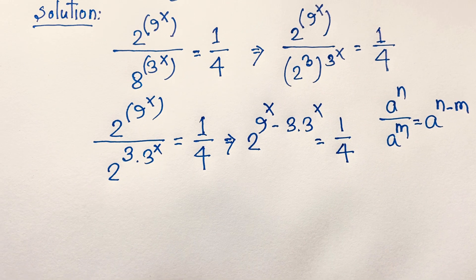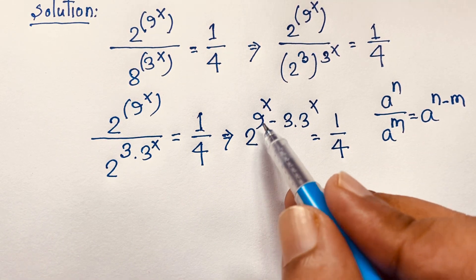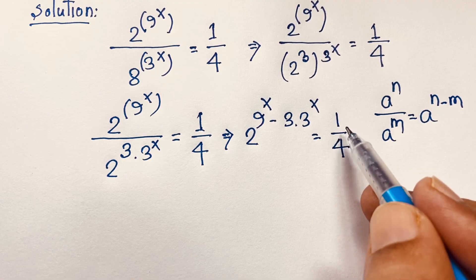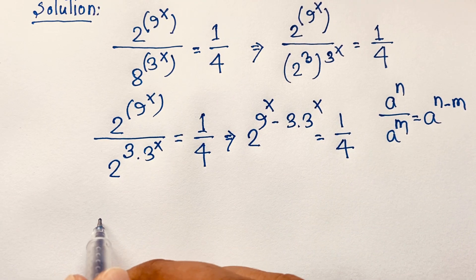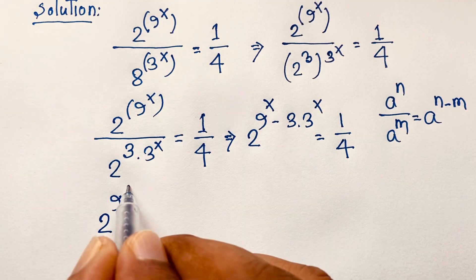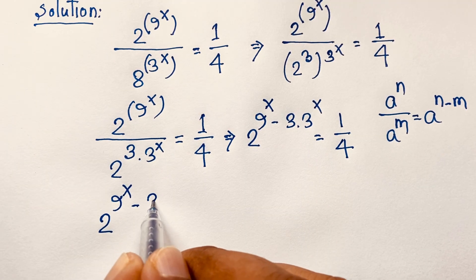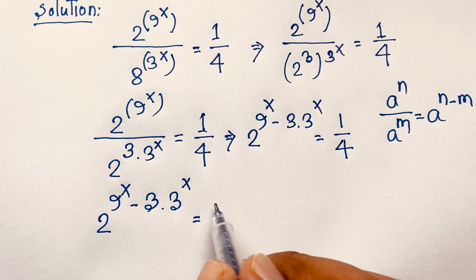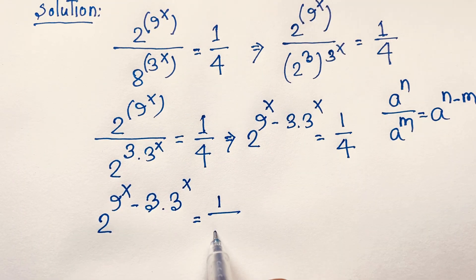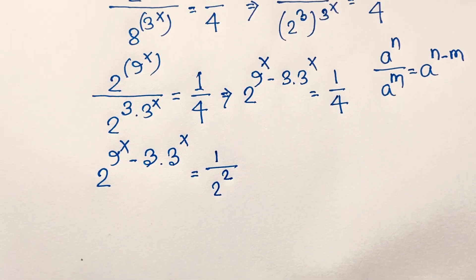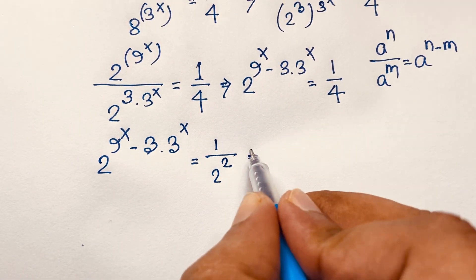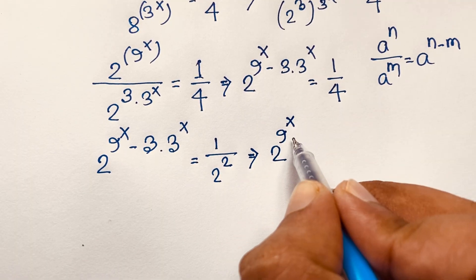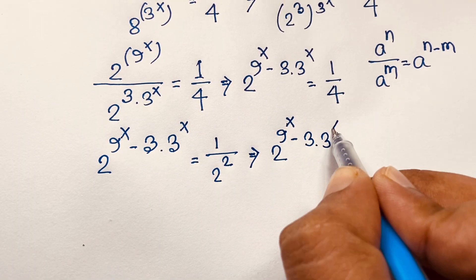At this moment, the right side is a fraction, and I want to express it as a power of 2. So 1 over 4 equals 1 over 2 to the power 2. We now have 2 to the power (9x minus 3 times 3^x) equals 1 over 2 to the power 2.